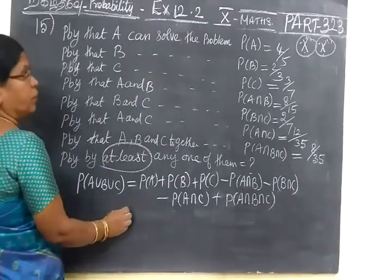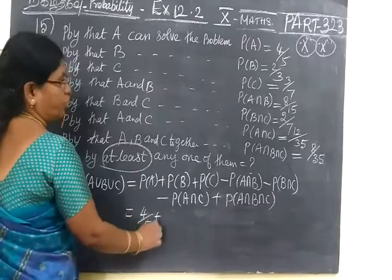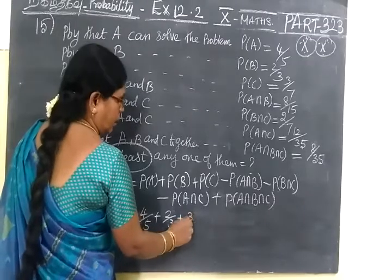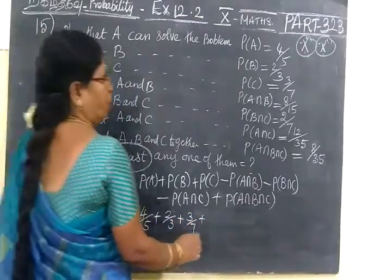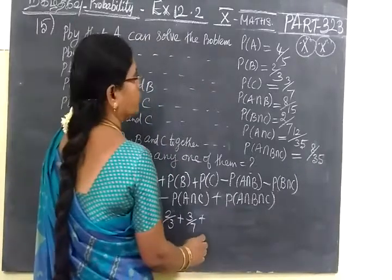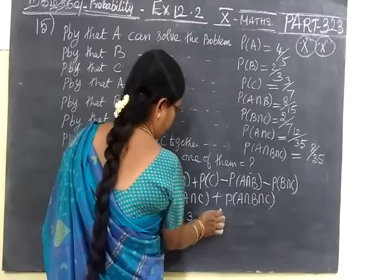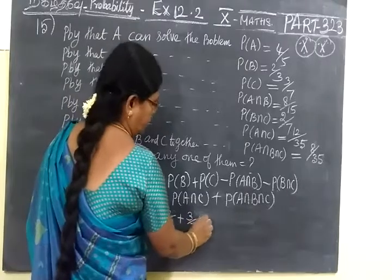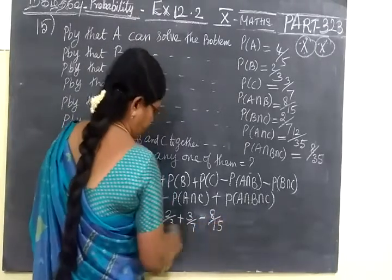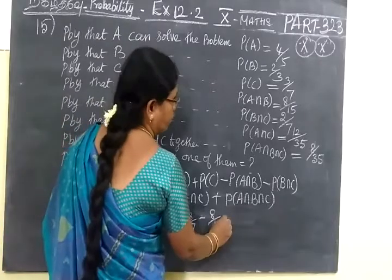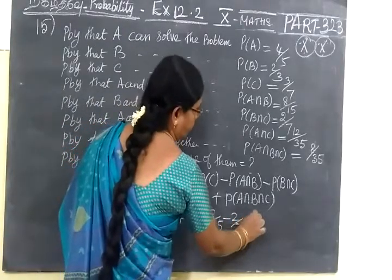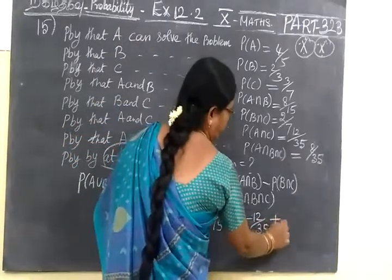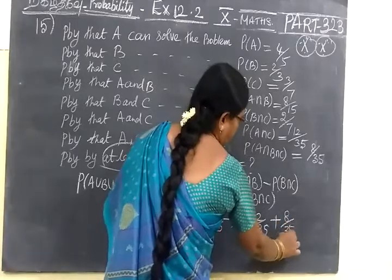Now you apply the numbers. 4 by 5, carefully you should write it. Then 2 by 3. For this, as the LCM is 105, often if we do this problem we come to know the answer also. The answer is 101 by 105. So first 3 we have written, then minus. Next 3 for the first 3 plus, then next 3 minus.